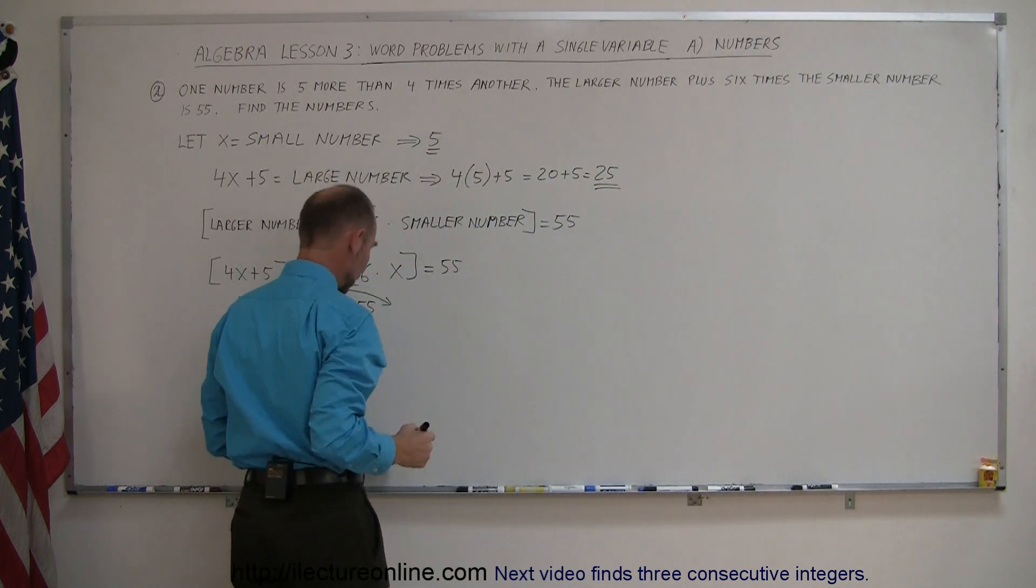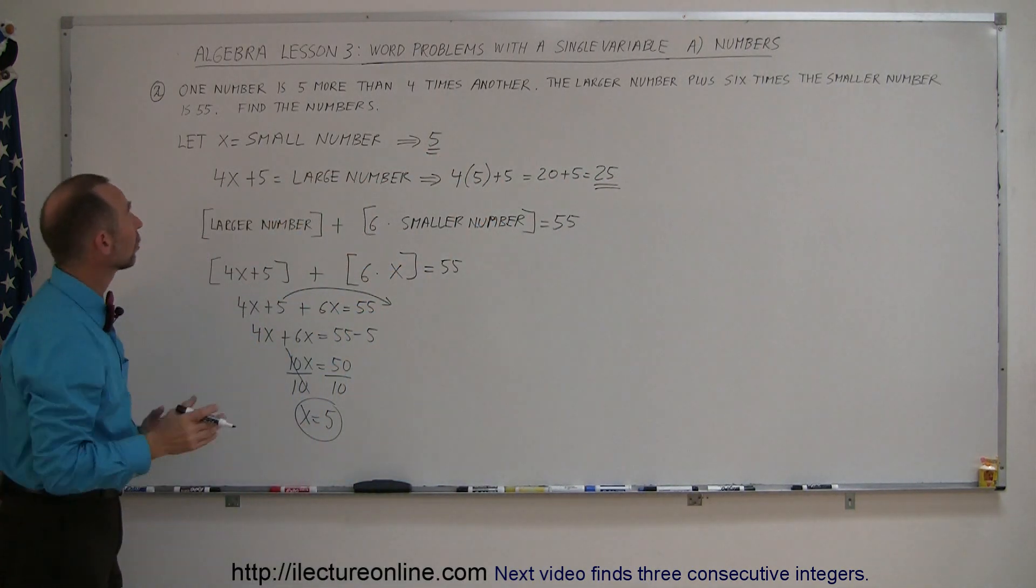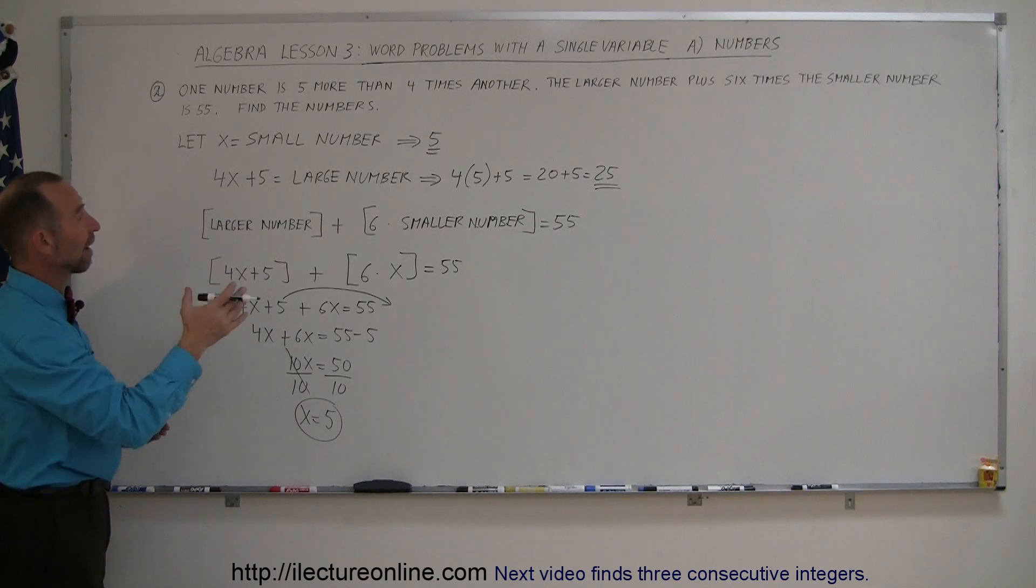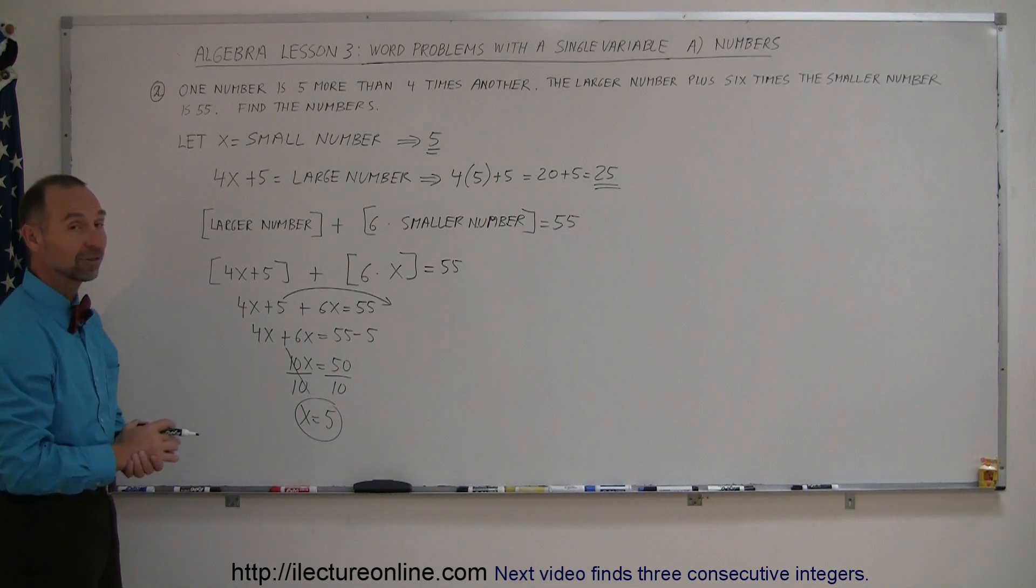So, there's the large number, there's the small number, and sure enough, the large number is five more than four times the small number. So, there we go. That's how you do that one, and if you'd like to see more examples, stay tuned for the next one.